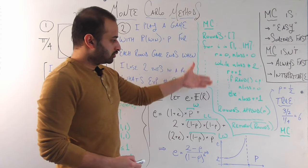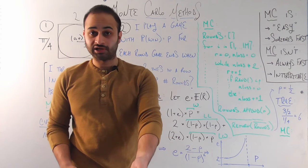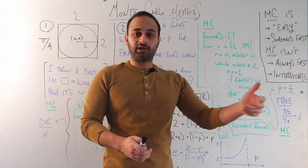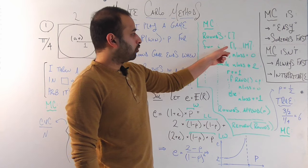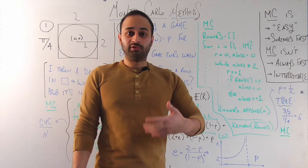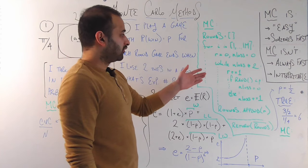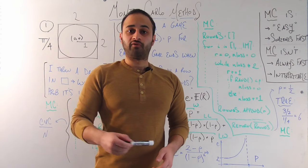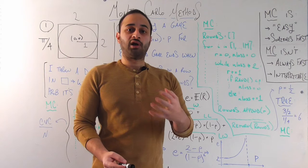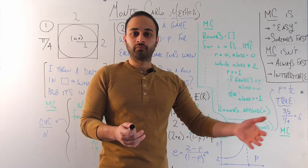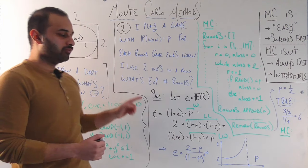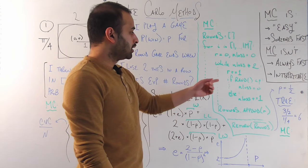I want to explain the code — this is pseudocode, but it wouldn't be too hard to write yourself. I initialize rounds to be empty; this stores the number of rounds played across various simulations. For i in 1 to 1 million, I do 1 million simulations of this game. On each simulation, I set r equal to 0 — that's the number of rounds played on this simulation — and n_loss equal to 0, which is the number of losses I've gotten in a row so far. Then we have an inner while loop: while n_loss is not equal to 2, meaning I haven't hit two losses in a row.